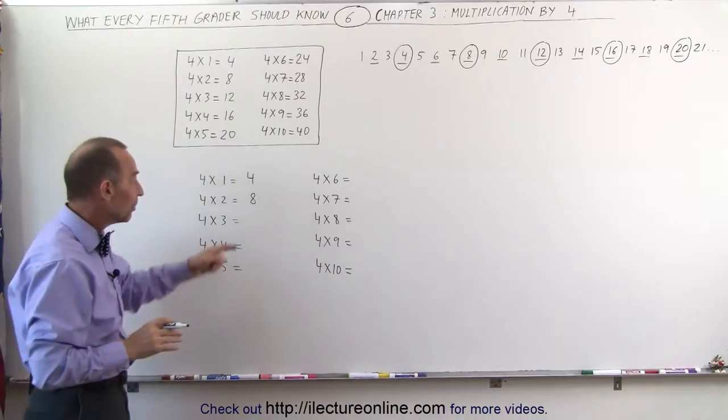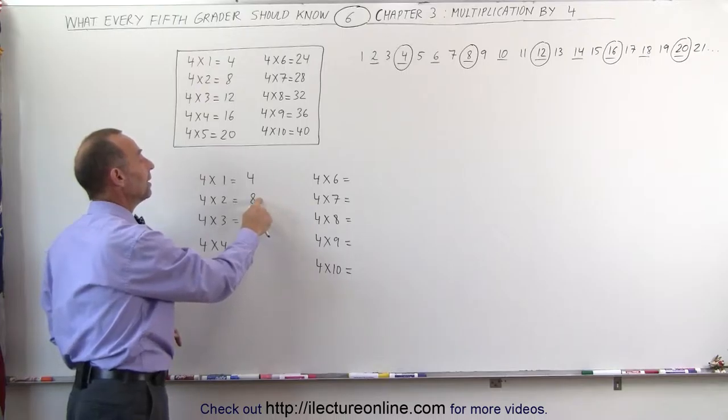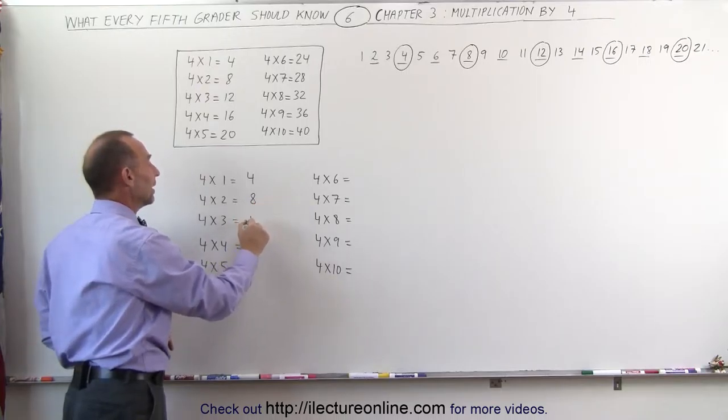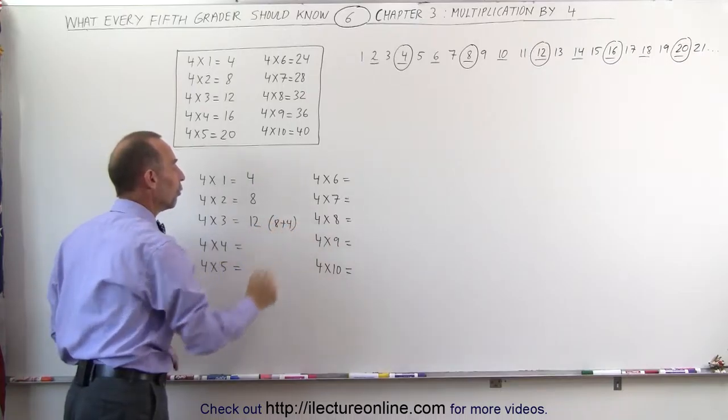But now the next one, we simply have to add 2 times 2. In other words, add 2 to 8, you get 10, add another 2, you get 12, and that's the answer to 4 times 3. In other words, this is 8 plus another 4.